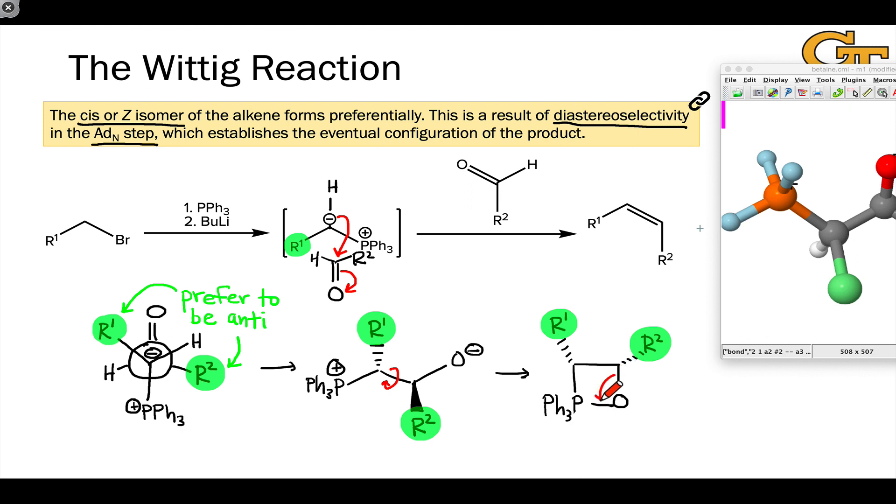Because the next step, the elimination, happens with retention of configuration, the major product we observe is the cis alkene.